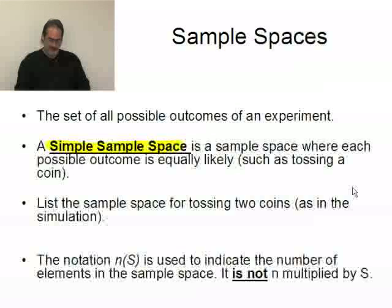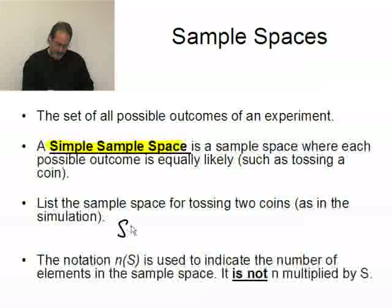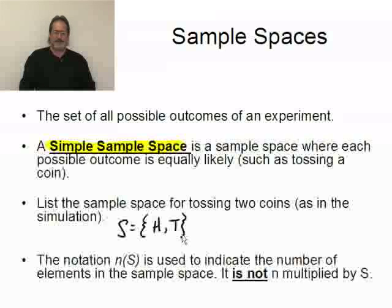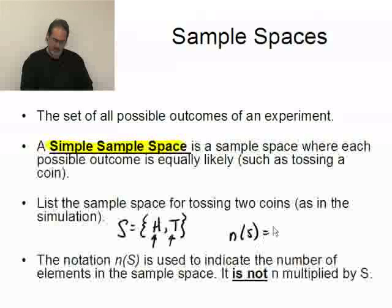A list of the sample space for tossing two coins, as in the simulation we did in the calculator earlier — we say S equals, using set notation: head, tail. That's the sample space. The notation N of S is used to indicate the number of elements in the sample space. In this particular sample space there are two elements, so N of S equals two.